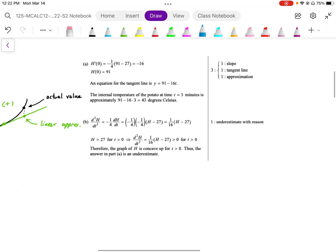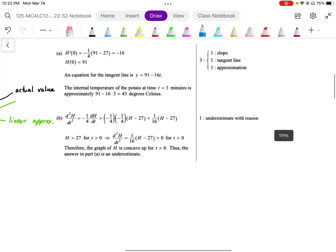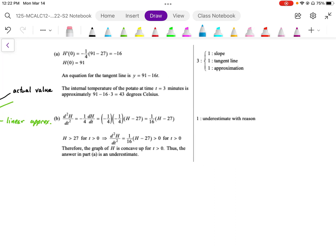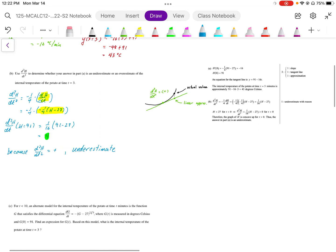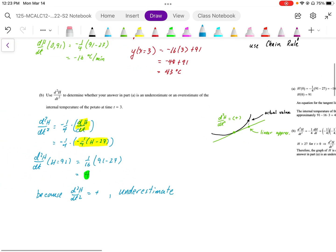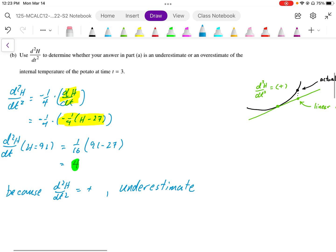Looking at the mark scheme for question number one, for part A we get one mark for the slope, one mark for a tangent line, and one mark for the approximation. For question B, it's an underestimate with some kind of justification. You can draw a picture or just state the concavity, and that will justify the underestimate.